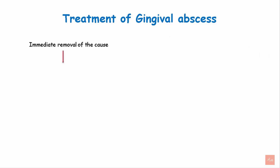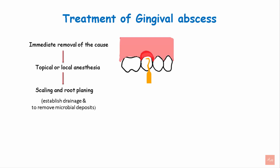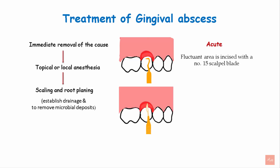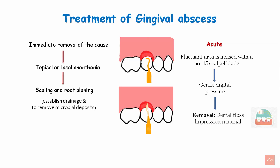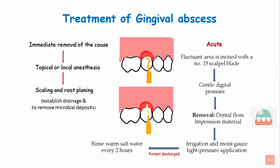For the treatment of gingival abscesses, immediate removal of the cause is the most important part. This is performed by giving local or topical anesthesia. Scaling and root planing is performed to establish drainage and remove any microbial deposits. In case of acute conditions, the fluctuant area is incised with a number 15 scalpel blade. A gentle digital pressure is applied over the area and removal of any causative materials is performed. This is followed by irrigation and moist gauze light pressure application. The patient is then discharged and asked to rinse with warm salt water every 2 hours, and scaling is completed after 24 hours.